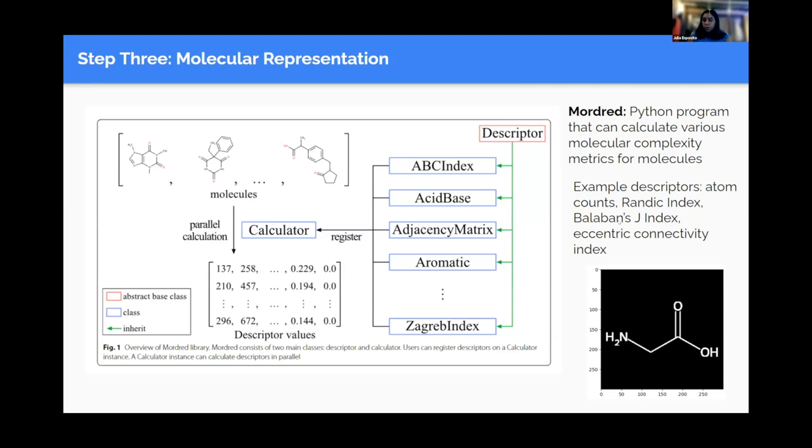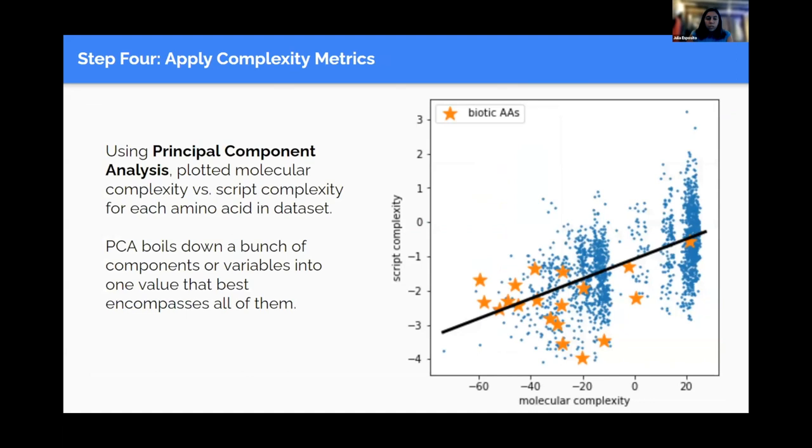Once we had this list of different molecular complexity metrics for an amino acid and a list of different script complexity metrics, we could go ahead and actually compare them. We used a principal component analysis for all the different script complexity metrics, and we did that also for the molecular complexity metrics to come up with the graph that you're seeing on the right. We took a bunch of different amino acids and their smiles representations and calculated these values for script complexity and molecular complexity. The star ones are biotic amino acids. All the blue points are just non-biotic amino acids. From here, we're hoping to work more on this and come up with more complexity metrics to work with and do more comparisons. Super excited to see how things go. And I definitely recommend checking out other talks.